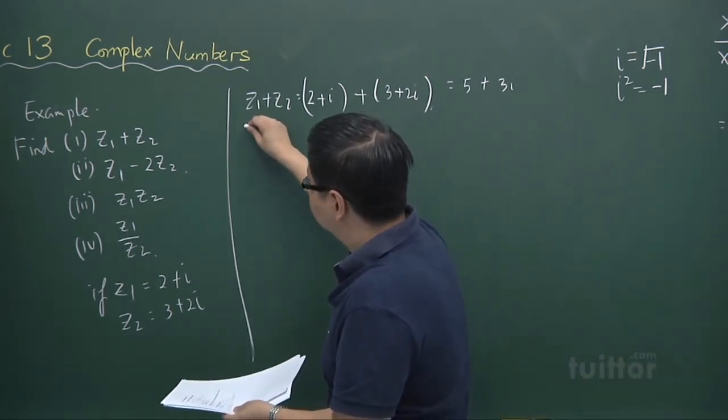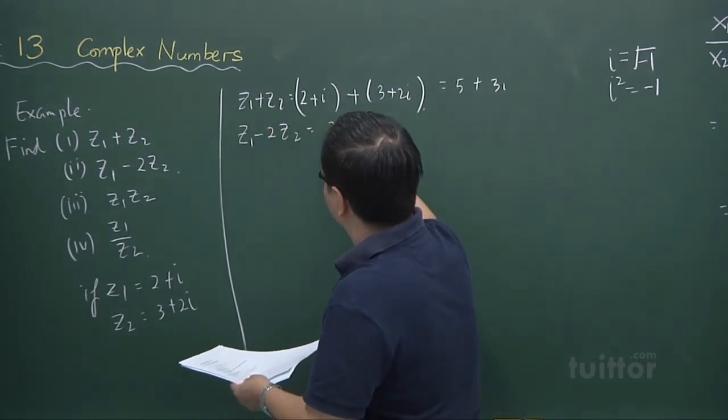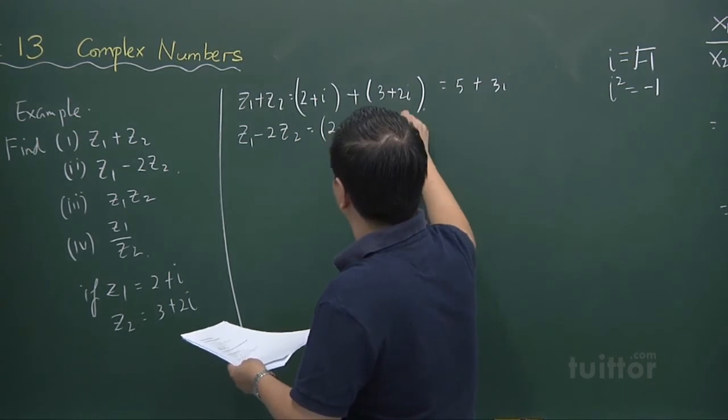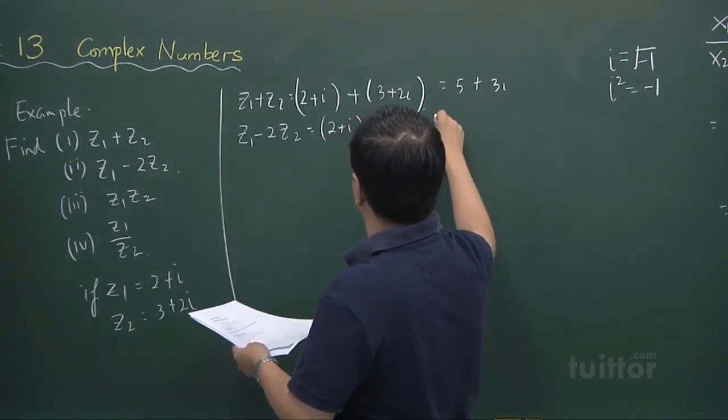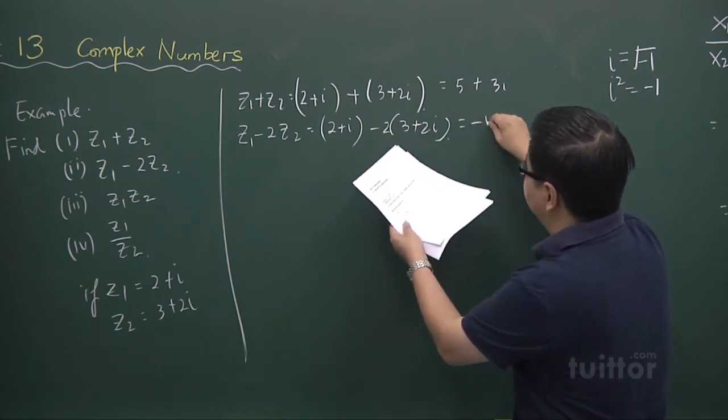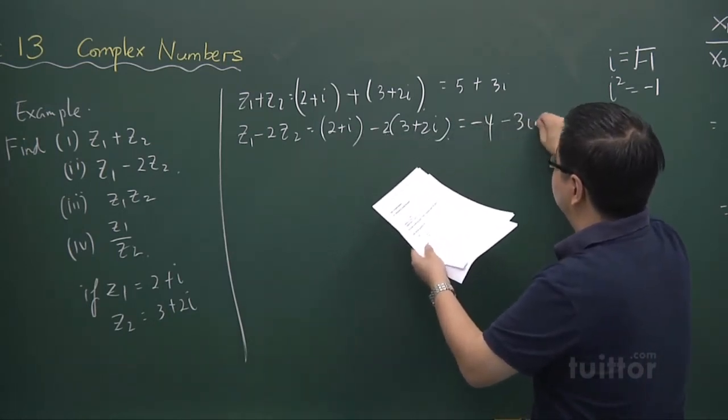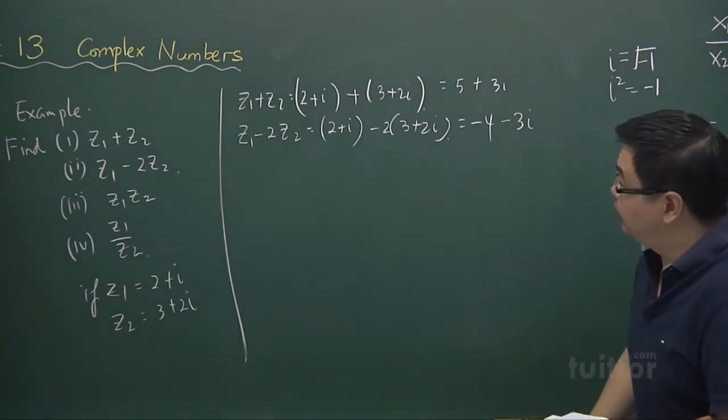And how about z1 minus 2z2? It becomes 2 plus i minus 2 times 3 plus 2i. So we have 2 minus 6, so it's negative 4. And i minus 4i is negative 3i. So that is the second part.